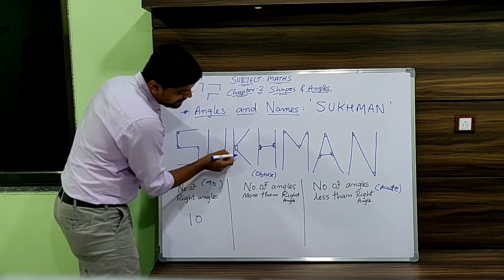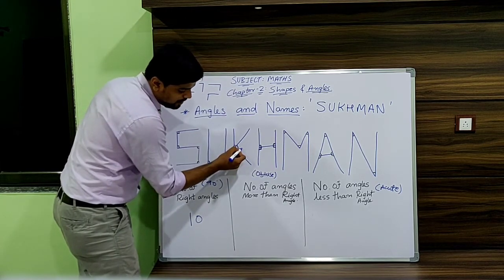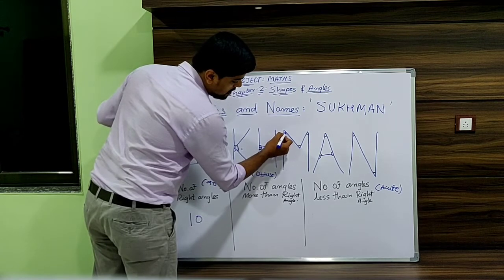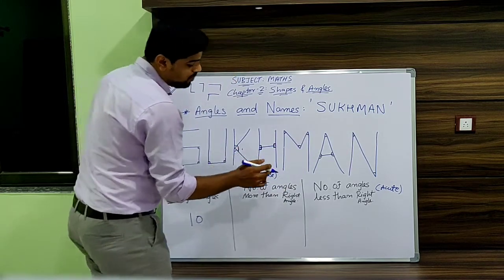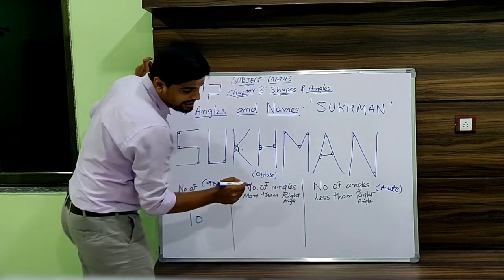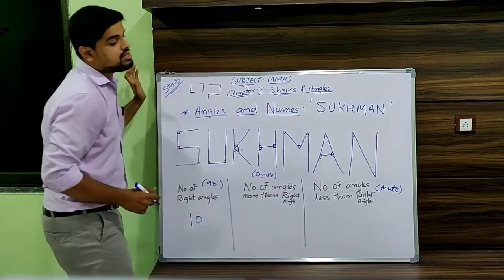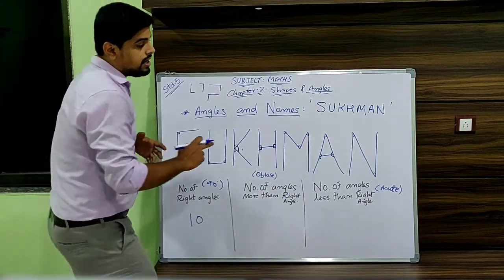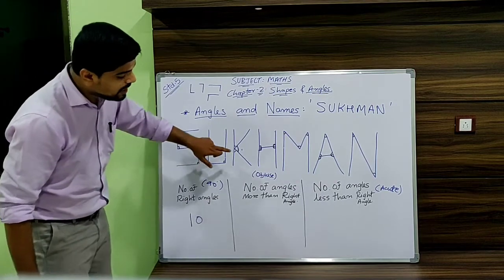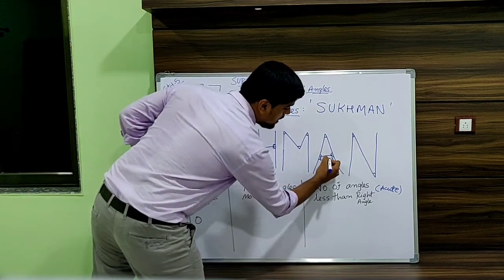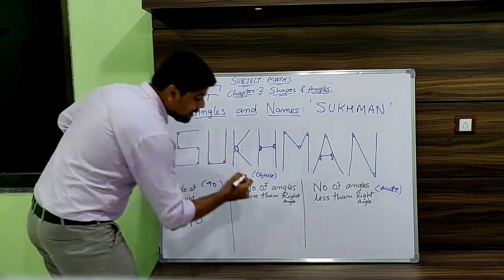This angle is not more than 90, this is also not more than 90, but this one is more than 90. So K has 1 obtuse angle. M — not more than 90, not more than 90, not more than 90. Does A have any obtuse angle? Yes, it has this angle and this angle, both more than 90 degrees. Does N have any obtuse angle? No. So total obtuse angles: 1, 2, and 3. The total number of obtuse angles is 3.